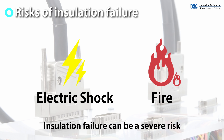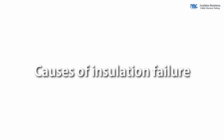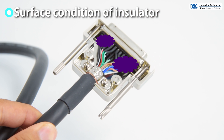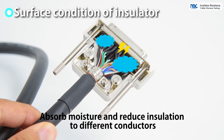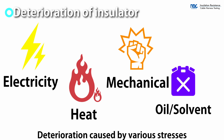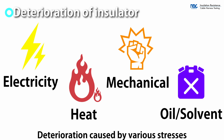Insulation resistance testing is aimed at detecting insulation defects. The surface condition affects insulation performance. Dust and dirt may stick to the harness processing part and inside the connector. These absorb moisture and allow electricity to flow easily across the insulator surface. Insulators deteriorate due to a variety of stresses, such as electrical stress, heat, and mechanical damage. Insulation is also affected by oil, solvents, and other substances.